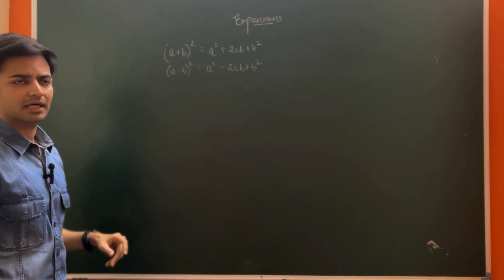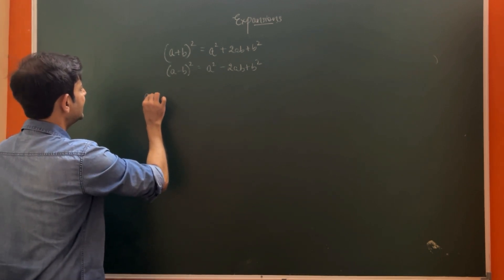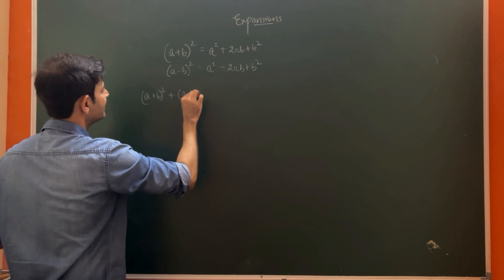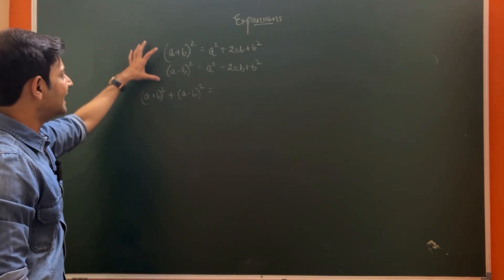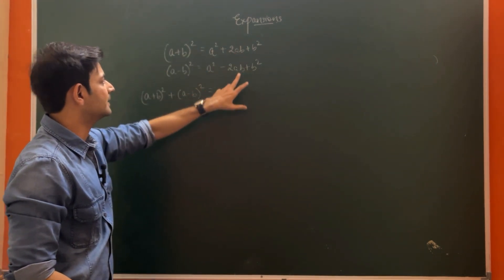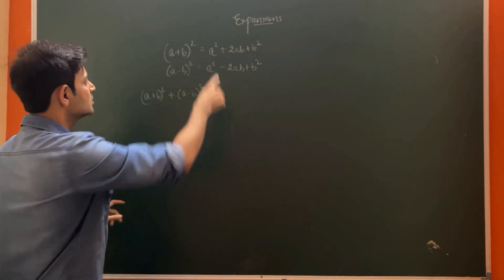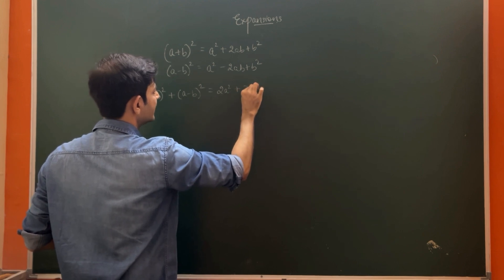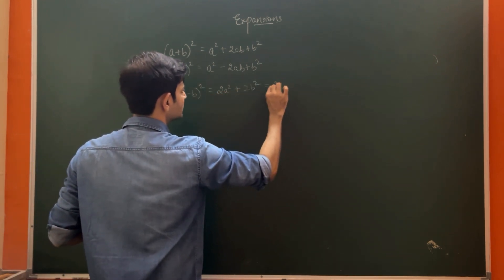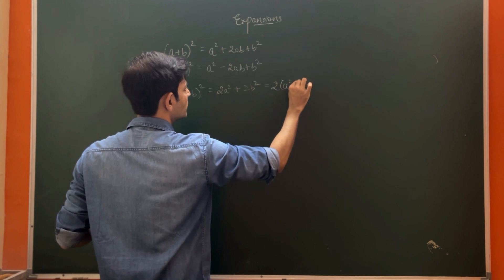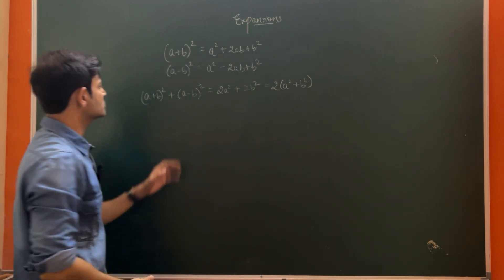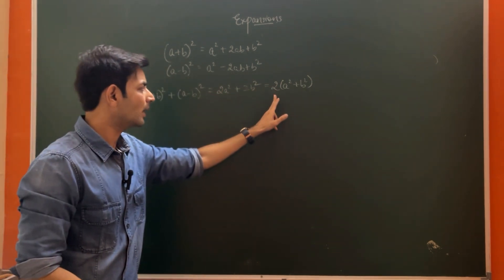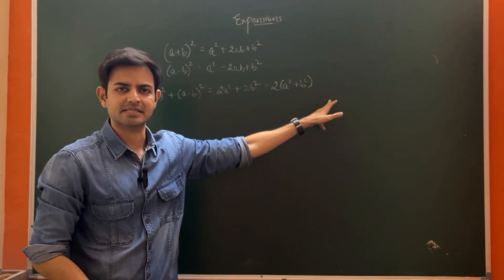Now if I add these two formulas — (a + b)² plus (a - b)² — the 2ab and minus 2ab will get cancelled, so we get 2a squared plus 2b squared. Taking 2 as common, this gives us: (a + b)² + (a - b)² = 2(a² + b²).